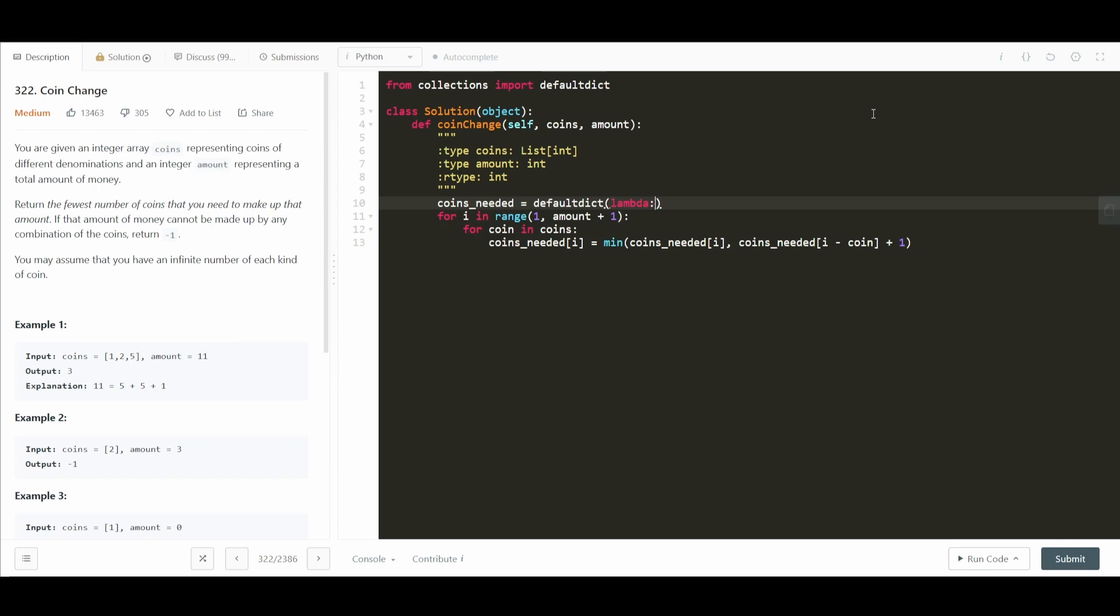And the lambda function is just going to return float infinity. In other words, the default value is infinity or a very large number. So we know that the min will not take that value. For example, let's say i is 1 and coin is 5. It's just going to return infinity. And we know the minimum won't take infinity. And the other thing we need to do is set our base case and that's coins_needed at 0 is equal to just 0 because we know that to get to a 0 amount, you don't need any coins.